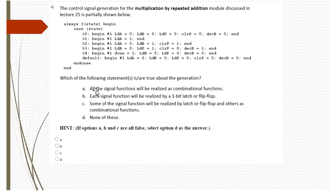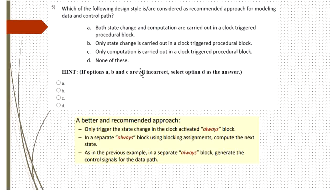The next question concerns control path signal generation in the multiplication example, discussed in Lecture 25. The part of the code shown here has states S0, S1, S2, S3, and S4. We need to find which statements are true. All the input signals with respect to this multiplication are functions that can be realized using combinational logic. That's why the answer is A.